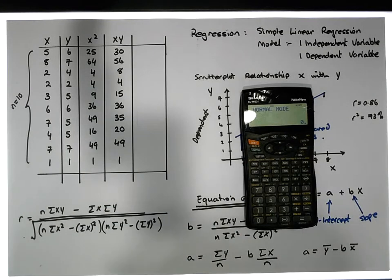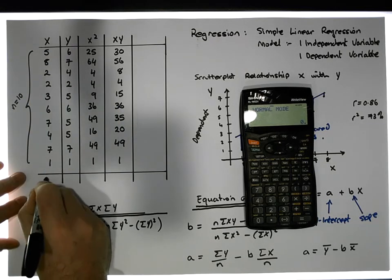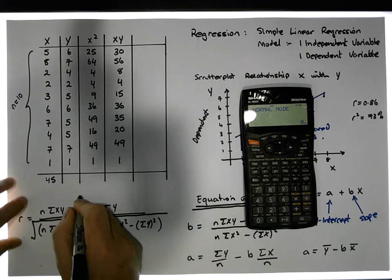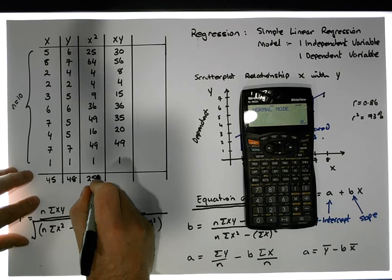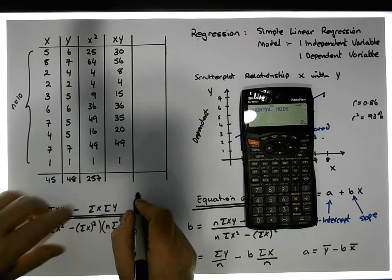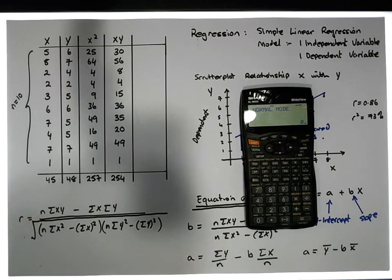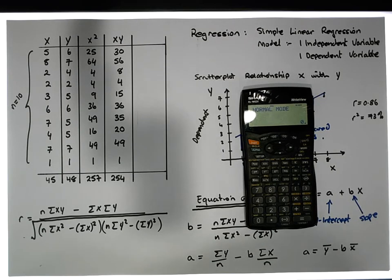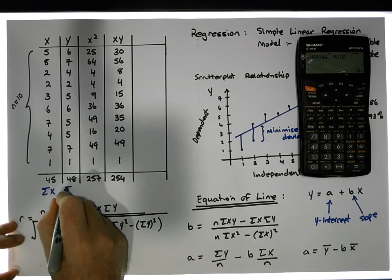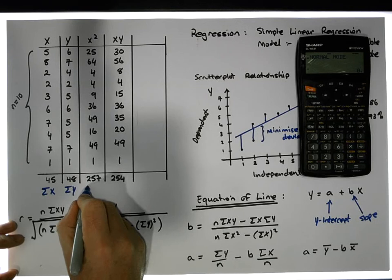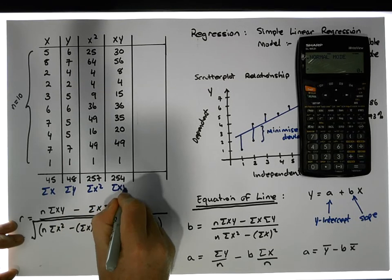Now we need to sum up these particular values. The summation of the x column is 45, the summation of the y column is 48, the summation of the x-squared column is 257, and the summation of the xy column is 254. From a notation perspective, these give us the sum of x values, sum of y values, sum of x-squared terms, and sum of the cross products xy.